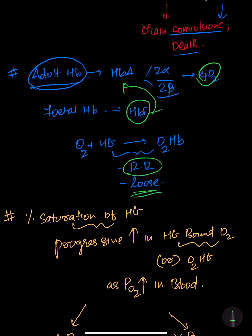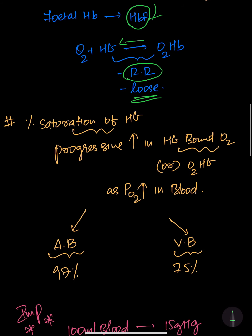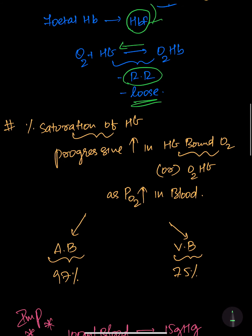Oxygen combines with hemoglobin to form oxyhemoglobin in a reversible reaction. The oxygen is loosely bound, so whenever the partial pressure of oxygen decreases or the partial pressure of carbon dioxide increases, this reaction can proceed in reverse, liberating oxygen.